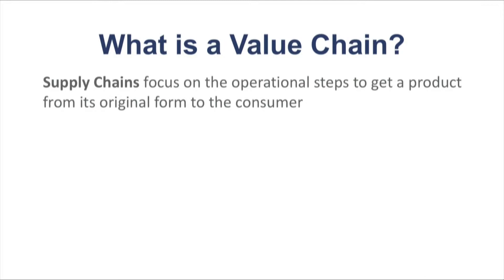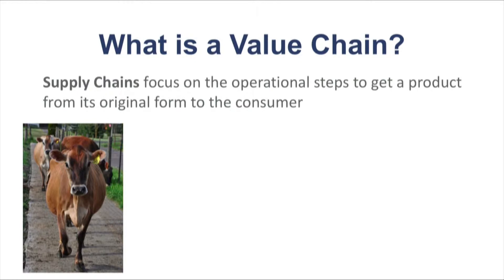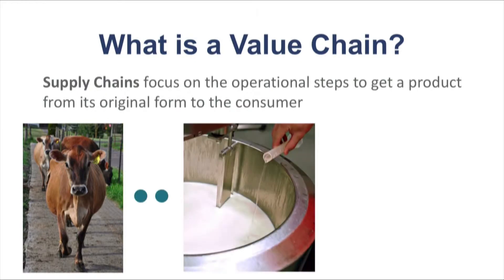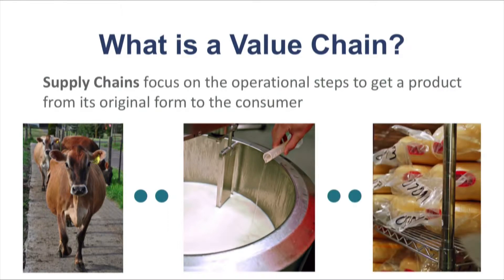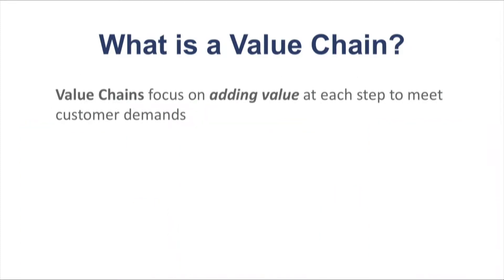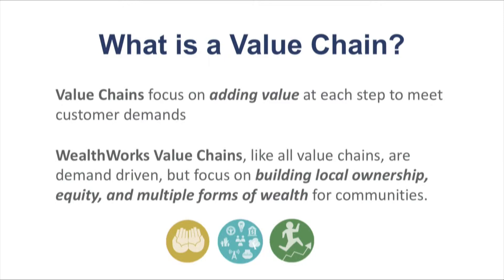So what is a value chain? Many of you will be familiar with the concept of a supply chain. A supply chain is the set of operational steps to get a product from its original form to the customer, and to do so efficiently and cheaply. For example, the supply chain for cheese starts with the cow on the farm, goes through processing and packaging steps, and ends with the product that consumers might buy in a store. A value chain is similarly focused on the set of steps to get a product from its original form to the customer, but is specifically focused on adding value at each step to meet customer demands. A WealthWorks value chain, like all value chains, is demand driven, but aims to carry out these steps in a deliberate way to build value for communities in the form of local ownership, equity, and multiple forms of wealth.